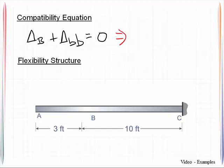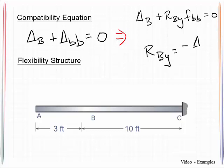All right, since we already have an expression for that delta BB, I can go ahead and get that substitute in. So delta B plus RBY times the flexibility coefficient is zero. That can all be reworked and written in terms of my redundant force. So it's negative delta B over FBB.